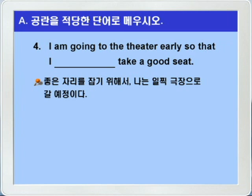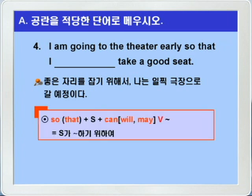이렇게 해석만 해봐도 답은 금방 나옵니다. 여기 so that은 뭐뭐하기 위하여, 이런 목적의 의미를 나타내죠. 그러니까 so that 주어, 그 다음에 조동사 can, will, may, 그 다음에 동사 원형이 나와서 주어가 뭐뭐하기 위하여, 이런 뜻의 구문을 쓰면 되겠죠. 정답은 조동사 can이나 will, may 중에서 어느 것을 써도 되겠습니다. may를 쓰는 경우는 매우 포멀한 표현으로 현대 영어에서는 잘 쓰이지 않는다고 그랬습니다.